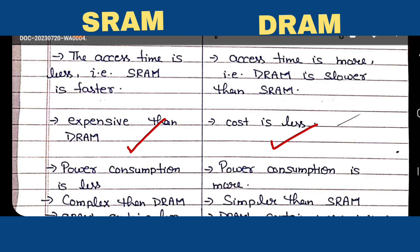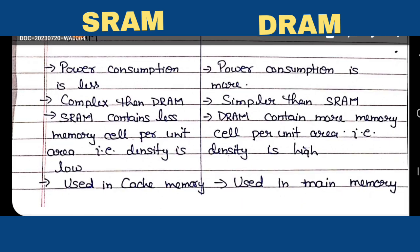In SRAM, power consumption is less because there is no need to refresh. But in the case of dynamic RAM, we have to refresh the capacitor periodically every time, which is why power consumption in DRAM is more in comparison to SRAM.